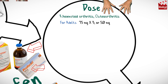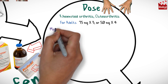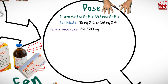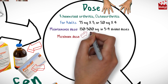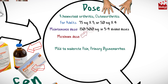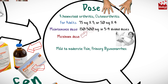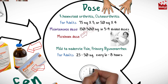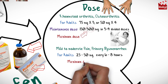The usual dose of ketoprofen for rheumatoid arthritis or osteoarthritis for adults is 75 milligrams three times per day or 50 milligrams four times per day, and the maintenance dose is 150 to 300 milligrams in three to four divided doses, so the maximum dose is 300 milligrams per day. For mild to moderate pain and primary dysmenorrhea, the usual dose for adults is 25 to 50 milligrams every six to eight hours as needed.